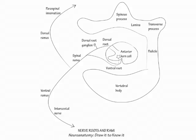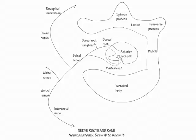Now turn your attention back to where the rami split to draw the sympathetic ganglion and related autonomic rami. Along the ventral ramus, attach the white ramus, so named because it is myelinated. Then, more proximally, just past the takeoff of the dorsal ramus, attach the gray ramus, which is unmyelinated. Indicate that the gray and white rami meet in a paravertebral sympathetic ganglion.